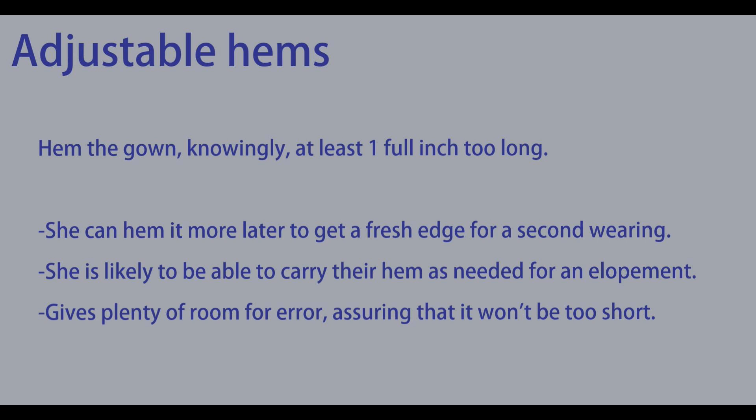So a safe hem amount, if you by measurement need to hem it by three inches—pandemically speaking—we're just going to hem it by two inches. All right, I know what's coming in the comment section. I can tell you that people are going to say this was a gross misuse of the adverb 'pandemically.' Yes, I agree, but it kind of works. You get what I'm saying, right? Just roll with it. Be nice. So back to the hem: yes, we're going to hem the gown knowingly at least one full inch too long. The reason why we're going to do this is: one, she can hem it more later to get a fresh edge for a second wearing; two, she is likely to be able to carry the hem as needed for an elopement. And that point says 'their hem' instead of 'her hem'—there's another error. Hey guys, if you're not going to leave a hateful comment about that, take one moment and hit the like button for me. I know you hear creators say that all the time, but it actually really makes a tremendous difference. Hit the like button, please.